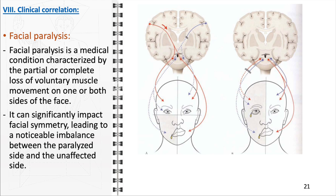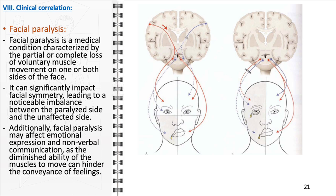Beyond the physical impairment, facial paralysis can have profound psychological and social implications. Facial muscles play a crucial role in expressing emotions, and when paralyzed, individuals may find it challenging to convey feelings, leading to misunderstandings in social interactions — particularly distressing where nonverbal communication is essential. The treatment approach depends on the underlying cause of the paralysis, and psychological support is also a vital part of managing the condition.